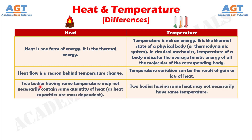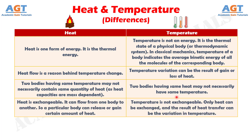Difference No. 3: Two bodies having the same temperature may not necessarily contain the same quantity of heat, as heat capacities are mass dependent, whereas two bodies having the same heat may not necessarily have the same temperature. Difference No. 4: Heat is exchangeable — it can flow from one body to another, so a particular body can release or gain a certain amount of heat — whereas temperature is not exchangeable. Only heat can be exchanged, and the result of heat transfer can be the variation in temperature.